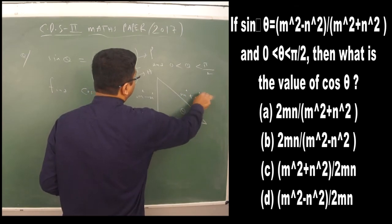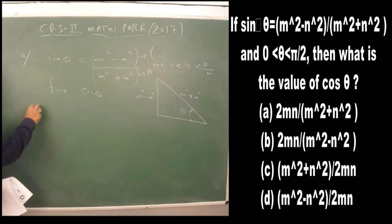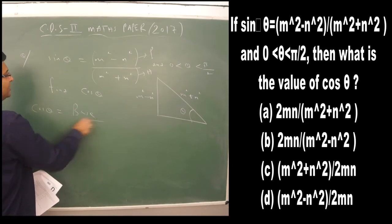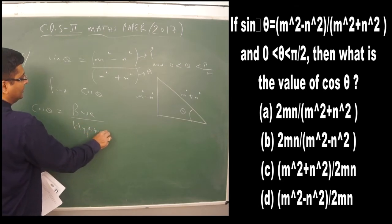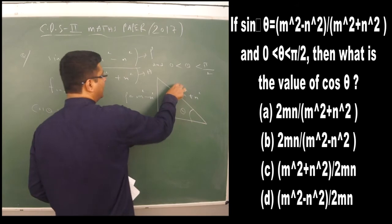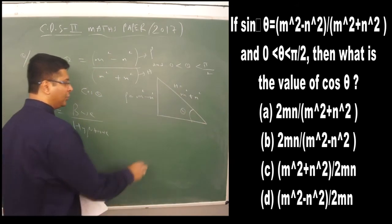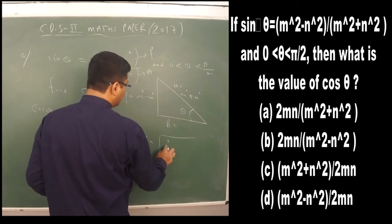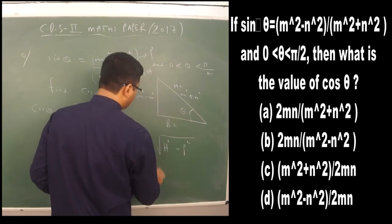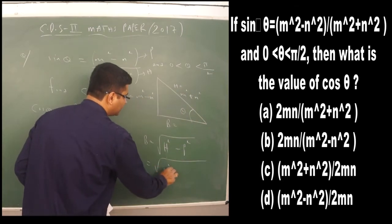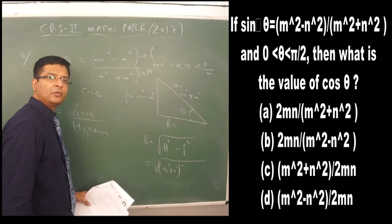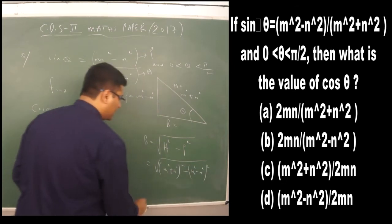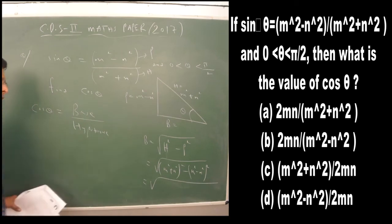Since cos θ = base/hypotenuse, and we already have the perpendicular and hypotenuse, we use the Pythagorean theorem to find the base. Base² = h² - p² = (m² + n²)² - (m² - n²)².